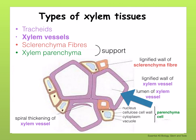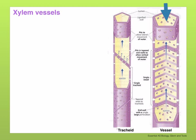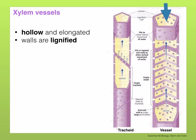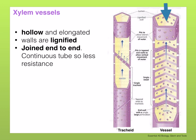Looking at xylem vessels: xylem vessels vary in structure depending on the type and amount of thickening in their walls, but they are hollow and elongated. As they mature, their walls become thickened with lignin which causes them to die. The end walls break down to form a perforation plate, which allows the cells to be joined end to end, forming a continuous tube so that there is less resistance. The word 'element' is sometimes used rather than 'cell' because the cell is a living structure whereas mature xylem vessels are dead.